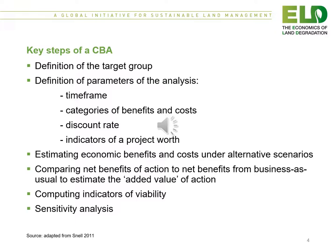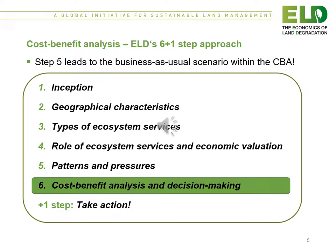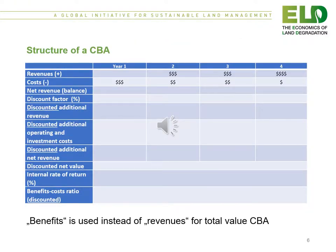Computing indicators of viability is a key step, and finally a sensitivity analysis. Please recall that step 5 of the ELD approach will lead to the business as usual scenario within the cost-benefit analysis. The structure of a cost-benefit analysis involves a listing of the total revenues and the total costs and the net revenues or the balance. The cost-benefit analysis can be found in the self-study module on cost-benefit analysis.